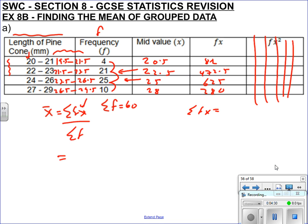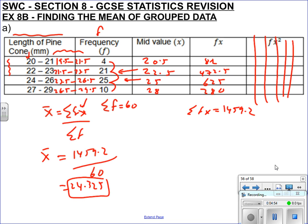Adding those up: 82 plus 472.5 plus 625 plus 280 gives ΣFX = 1459.5. So the mean X̄ is 1459.5 divided by ΣF which is 60, giving 24.325. You can round to three significant figures. That's the manual method — let's now use the calculator.